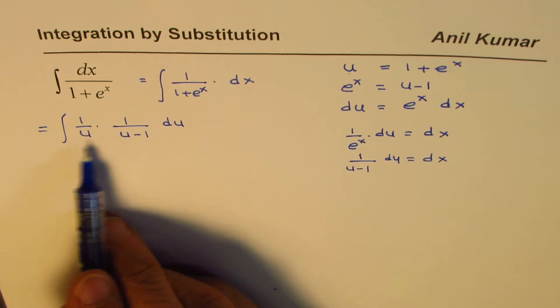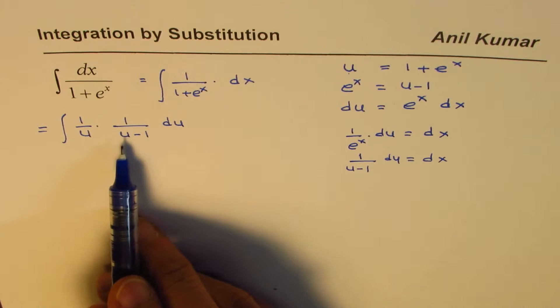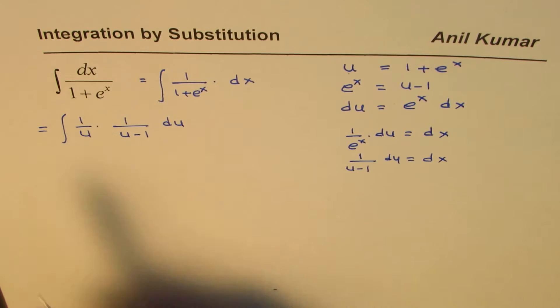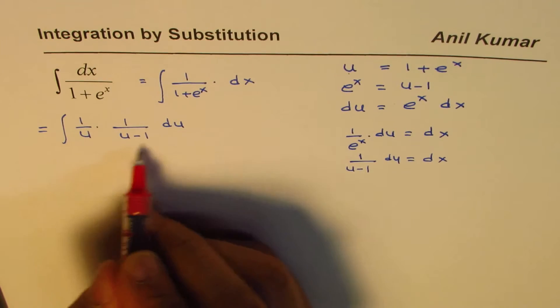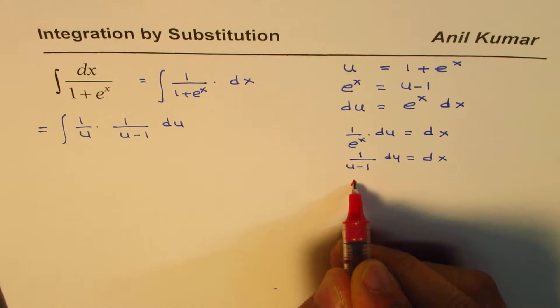Now the thing is that this kind of product in the denominator, we can actually write this as sum of two rational functions. So now I'll show you the technique of doing so.